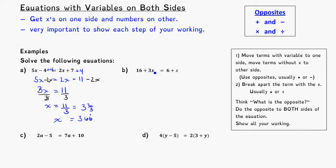Same idea here — I've got x's on both sides of the equation. I want to think about moving all the x's to one side and all the numbers to the other side. My first step might be to move the number to the other side of the equation. That's a 16, and I notice it's positive, so the opposite of positive 16 would be minusing 16. If I minus 16 from both sides, 16 minus 16 cancel, leaving me with 3x is equal to 6 minus 16, which gets me to negative 10. I still have the plus x over there.